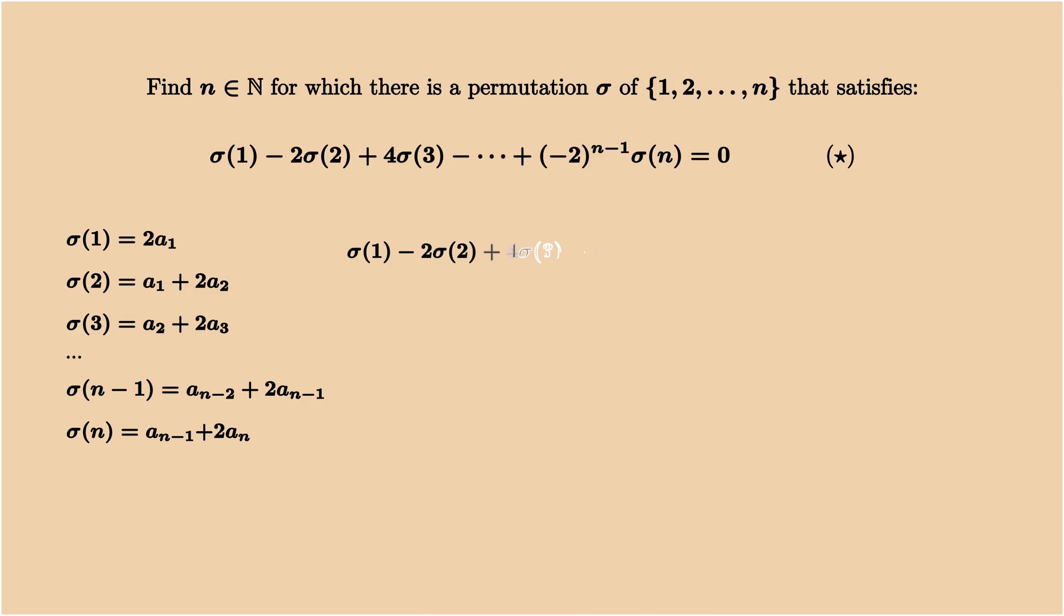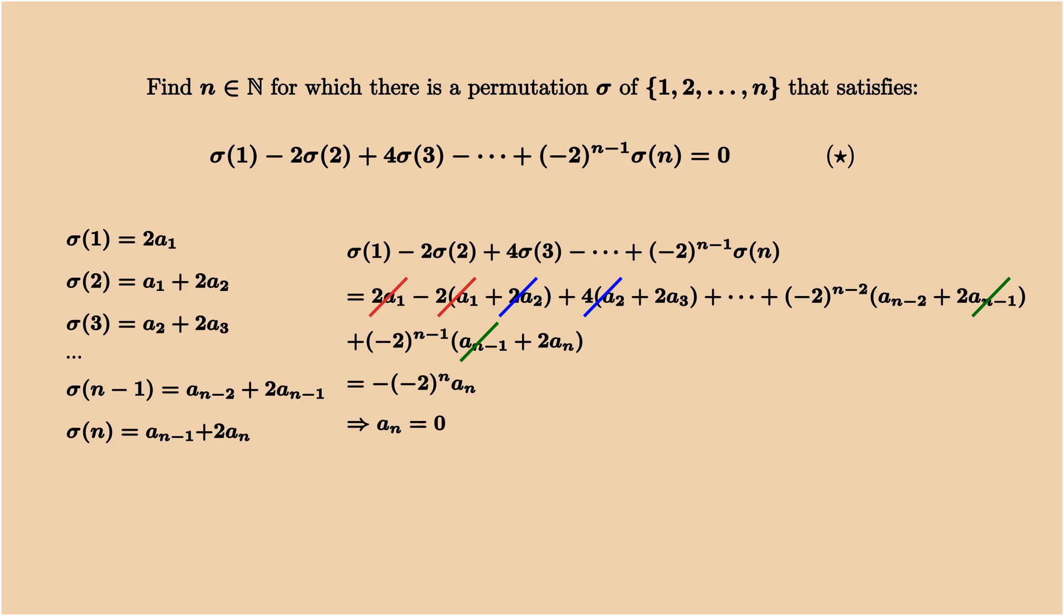Now replacing all the sigma i in the equation, we see that a1 cancels out, a2 cancels out, and all the intermediate terms cancel out. The only term left is an, which means an must be 0.